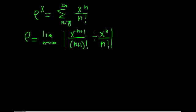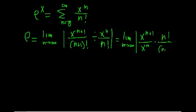And we can simplify this up a bit. We can say that that's equal to the limit as n approaches infinity of x^{n+1}. Now, when we divide by this, we essentially multiply by, well, we can flip this around. So x^n goes on the denominator, times n! over (n+1)!.